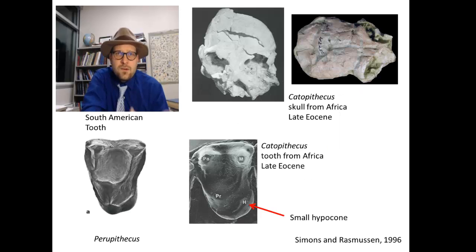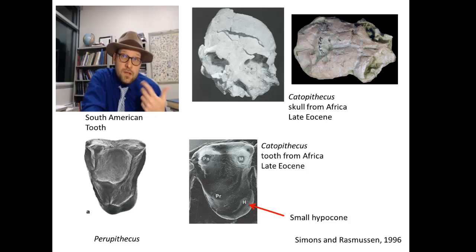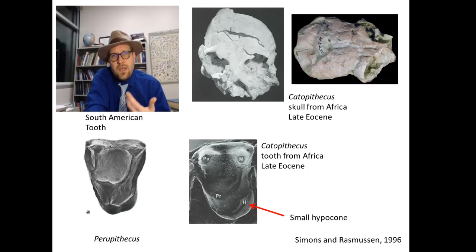In comparing this tiny little South American tooth to more completely known fossils, there are some similarities with African fossil primates Catapithecus, which contains a small hypocone extending off the cingulum of the upper molars, like that found both in Africa and South American monkeys. In fact, Catapithecus often groups more with South American platyrine primates than with other African catyrines.